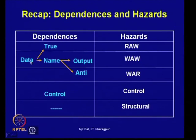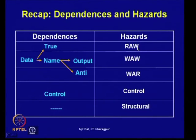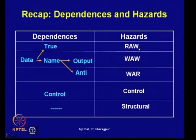Data dependences can be divided into two broad categories. The first is true data dependences, which lead to read-after-write type of hazards. We have discussed various techniques to overcome these — using forwarding, static instruction scheduling, and dynamic instruction scheduling by hardware — to overcome read-after-write hazards arising out of true data dependences.